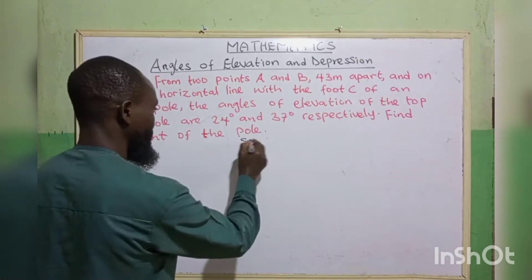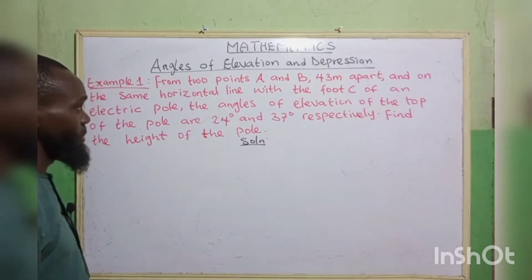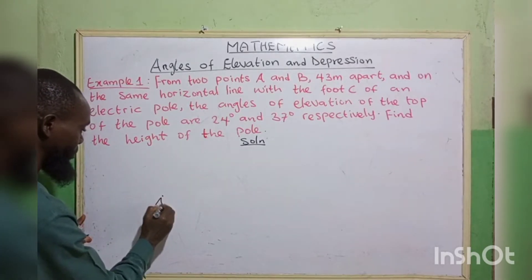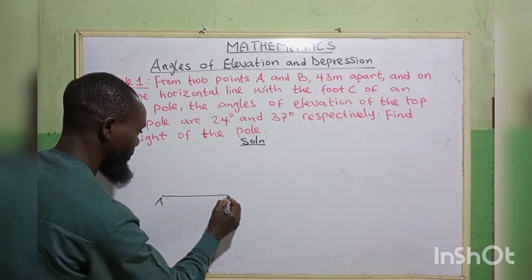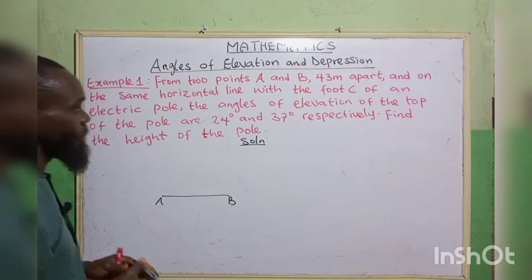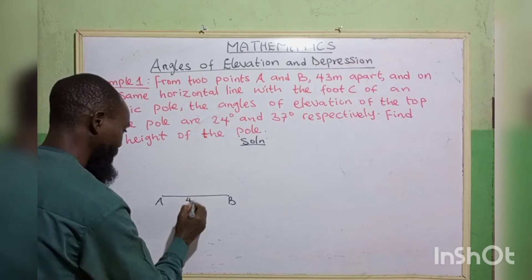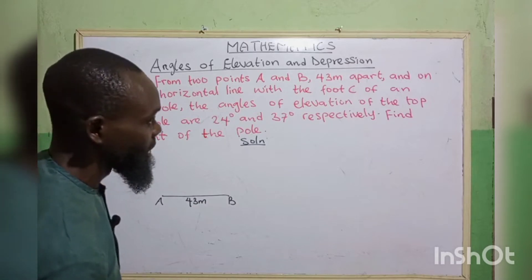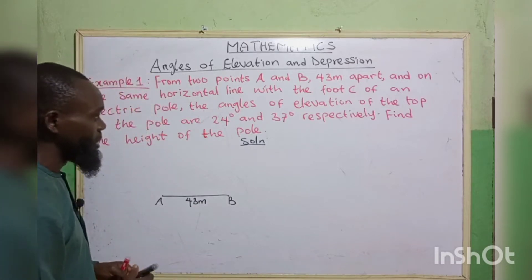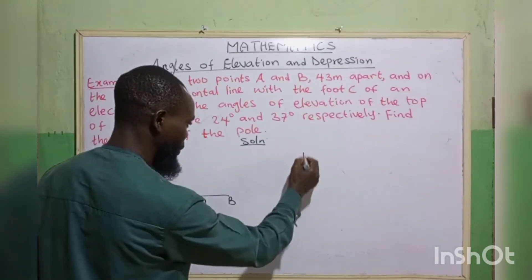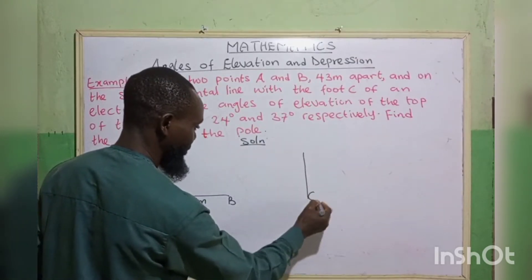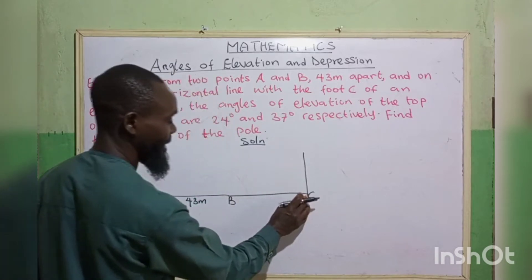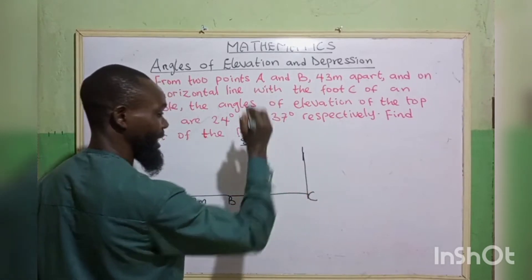Looking at this question, let's interpret it. From two points A and B — let's say we have point A, then point B — these two points are 43 meters apart. And on the same horizontal line with the foot C of an electric pole. Let's assume we have an electric pole somewhere here, and the foot of this pole is C. So A and B are on the same horizontal line with foot C. This is the electric pole, standing alone.